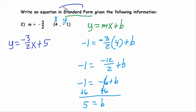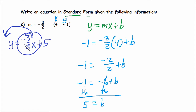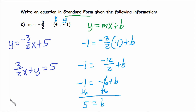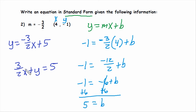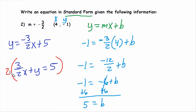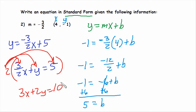This is slope-intercept form, but we want standard form, so we rearrange it. Moving the x term to the left side gives 3 halves x plus y equals 5. The rule says a must be positive and cannot be a fraction. To clear the fraction, we multiply the whole equation by the denominator 2: the 2's cancel, leaving 3x. Then 2 times y gives 2y, and 2 times 5 gives 10. So the final answer is 3x plus 2y equals 10.